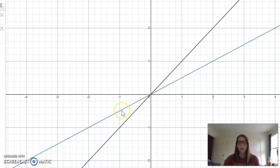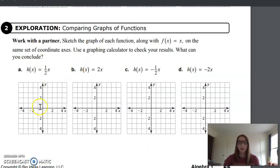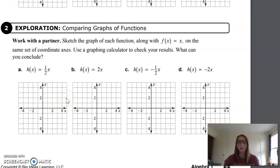So if my parent function goes through here, I just need to make it a little bit smaller, and it's going to be going through about half of that. Not looking for perfection, but showing that it's getting closer to the x-axis.